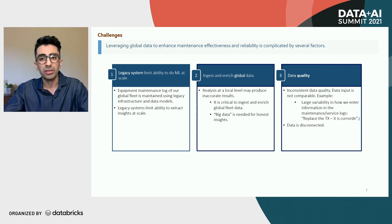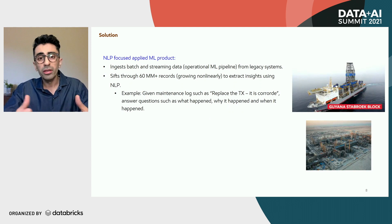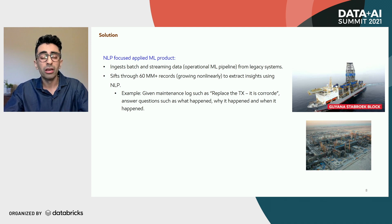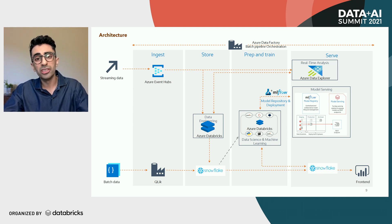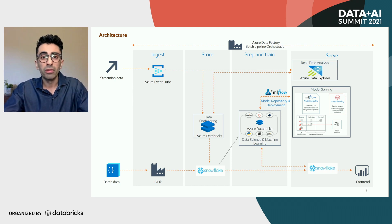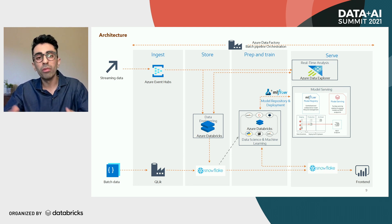Now let's talk about the solution. At a high level, we ingest our data from our legacy system into a cloud data warehouse. Once the data has landed in our data warehouse, we do model serving and model training using Azure Databricks. Here is the architecture diagram. For this slide, I'm going to focus on the batch data. Our batch data, which sits in our legacy system, is first ingested into our cloud data warehouse, which is Snowflake — that's in the second column under storage.